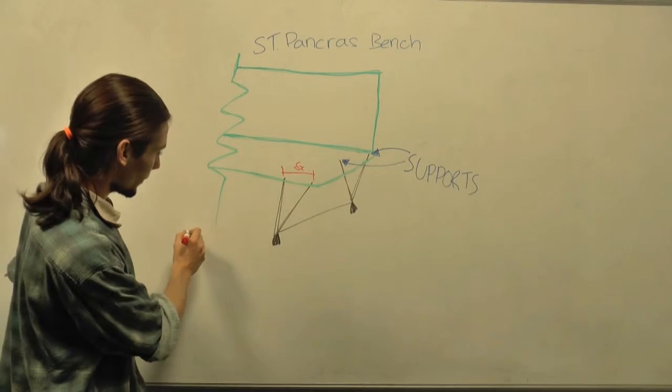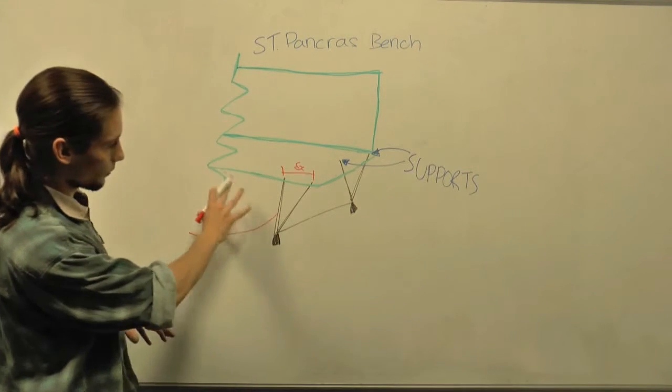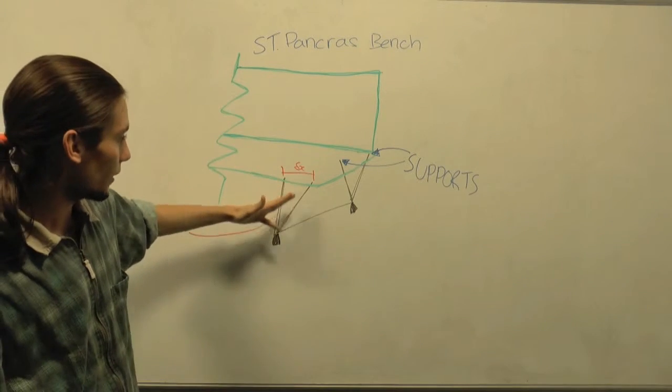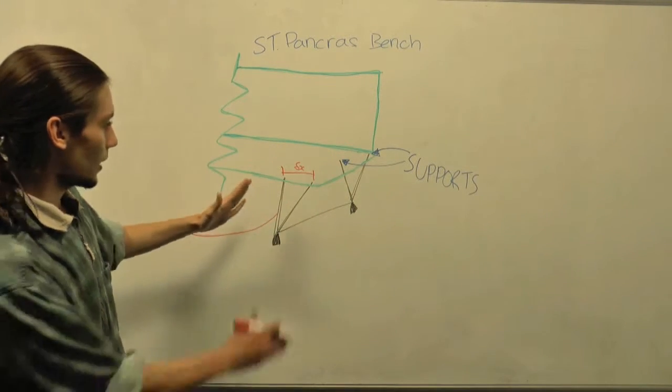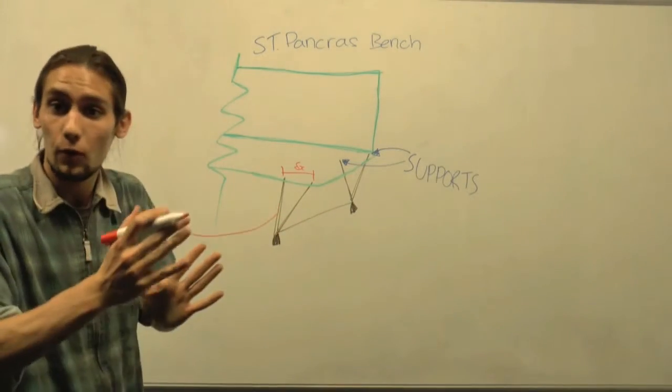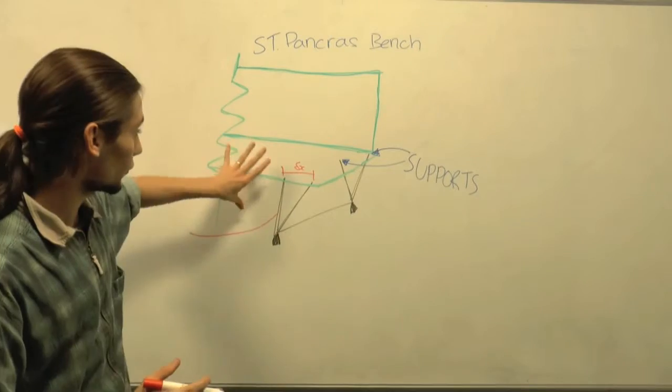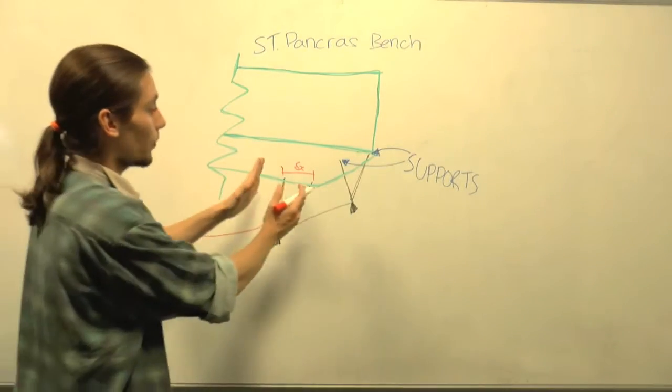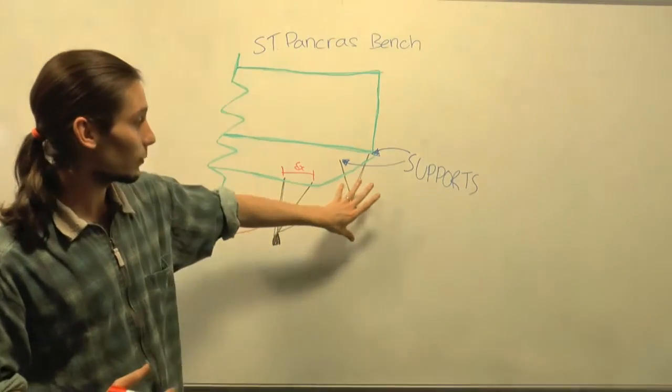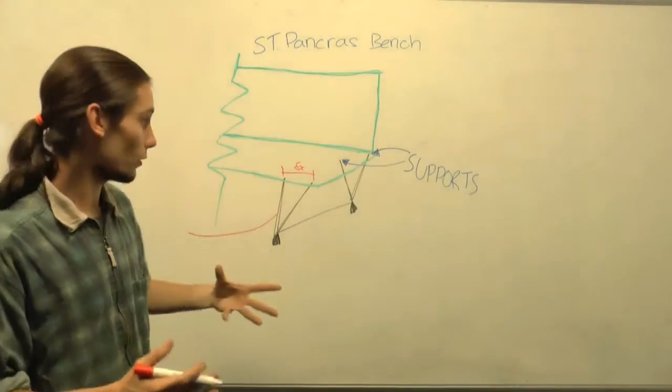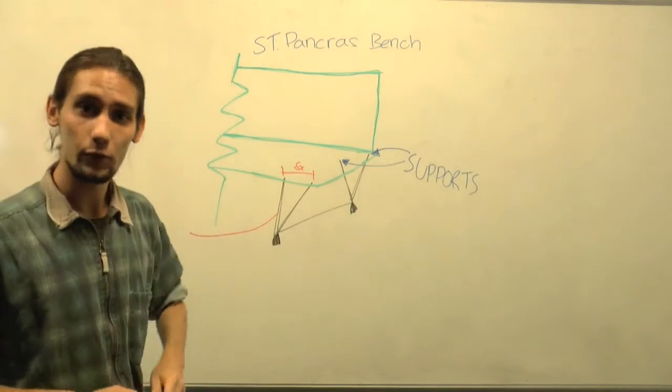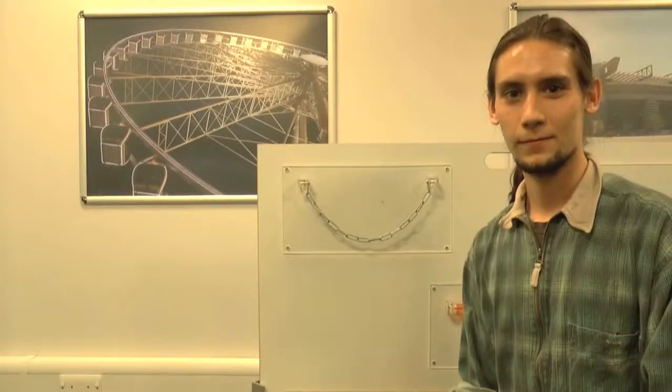So what this means is that the bench supports can actually provide some moment resistance. Now if you imagine someone sitting on the bench providing a load to the bench which is going to give you some bending behavior in the bench itself, then what's going to happen is one of these members is going to go into compression and the other member is going to go into tension. And the distance between them, this dx, is going to act as the lever arm which is going to provide a moment to resist the bending force in the bench. We call this pair of forces a couple, and there'll be one on the front side of the bench and the same setup on the other side as well. Although this isn't going to provide full moment resistance, it's going to help resist some of those moments a little bit.